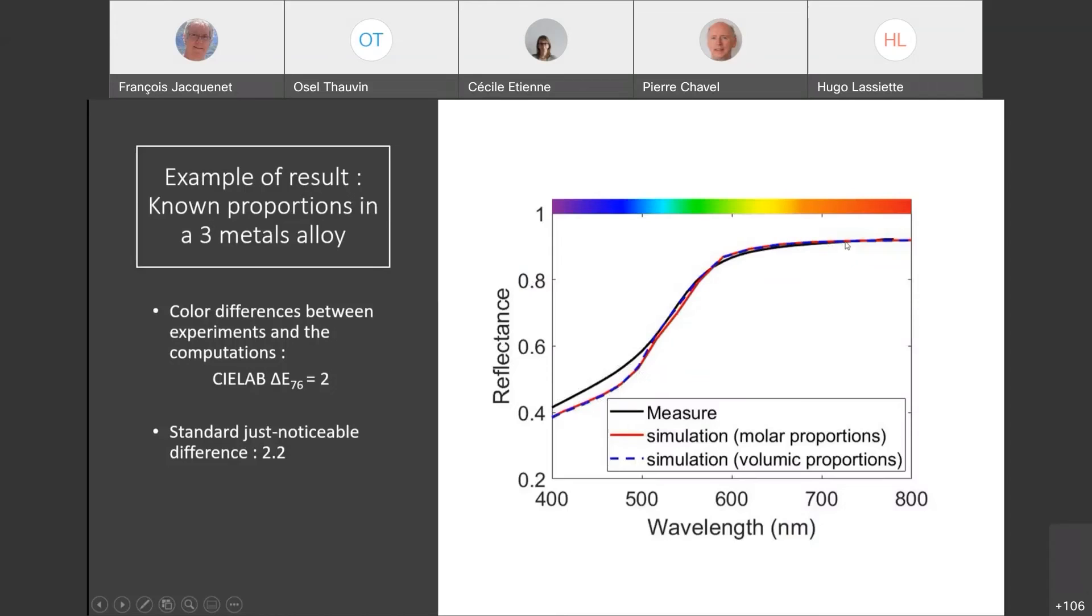We can see that they are quite close, even if there is still a small gap at low wavelengths. If we compute the color difference in CIE Lab 76, we obtain 2, which is under the minimal value for which the eye can see a color difference.